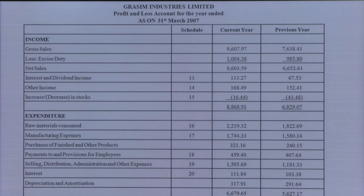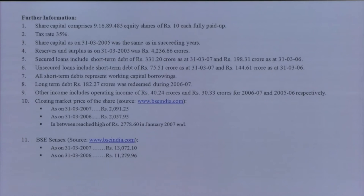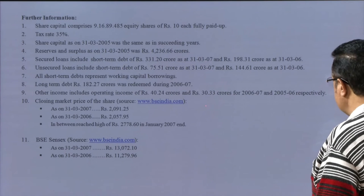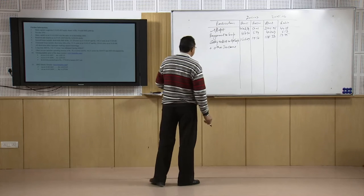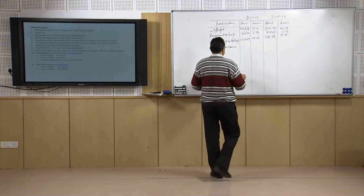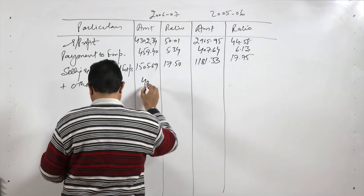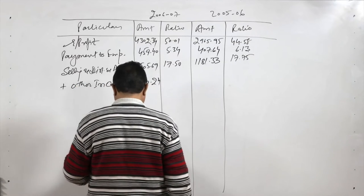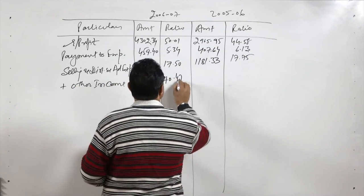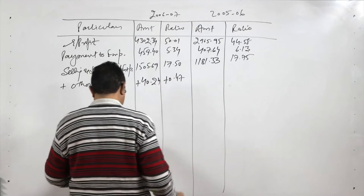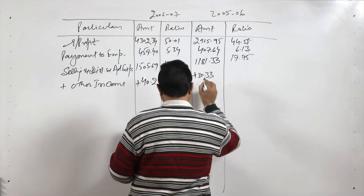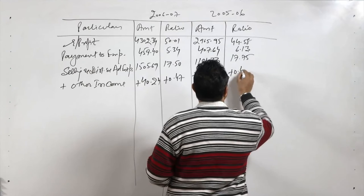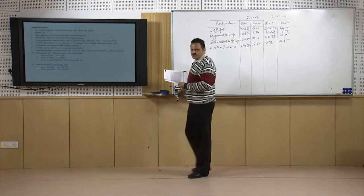Total other income is 168.49 crores, but we take only the operating income portion. The operating income included within other incomes is 40.24 crores for the current year and 30.33 crores for the previous year. Adding the operating income gives a ratio of plus 0.47 percent for the current year and plus 0.45 percent for the previous year — so other operating incomes have increased.